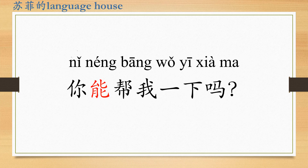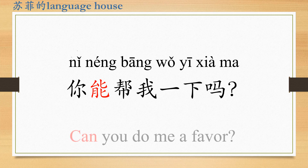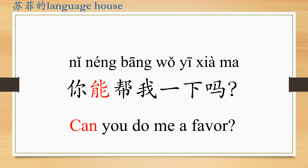Next example: 你能帮我一下吗 (Nǐ néng bāng wǒ yīxià ma)? 帮 means help. 一下 indicates the action could be finished shortly. 你能帮我一下吗? — Can you do me a favor?